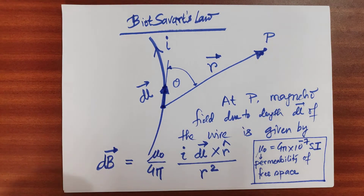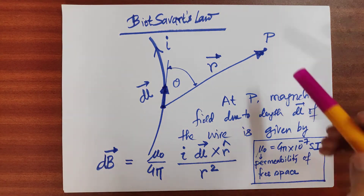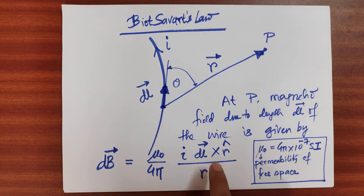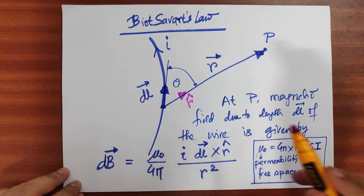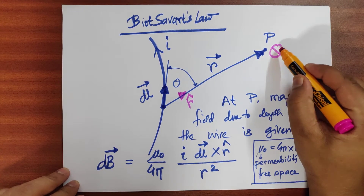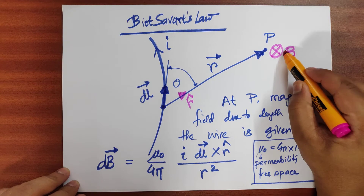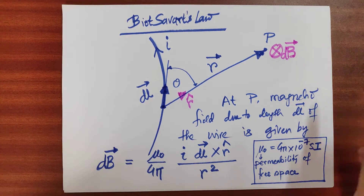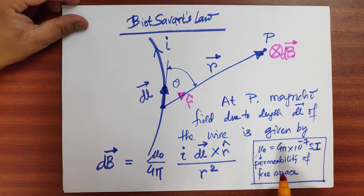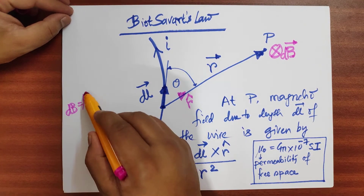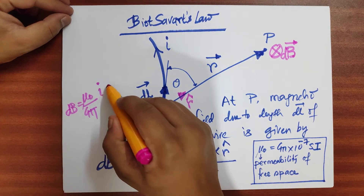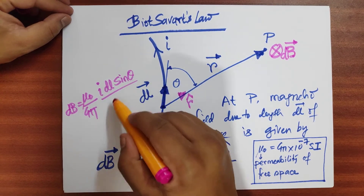So this is the Biot-Savart law. What about the direction of the magnetic field at point P? We look at DL cross R-hat. DL is here and R-hat is the unit vector in the direction of R. In this case, DB — the small magnetic field — will be directed into the plane of the paper, denoted by a cross.